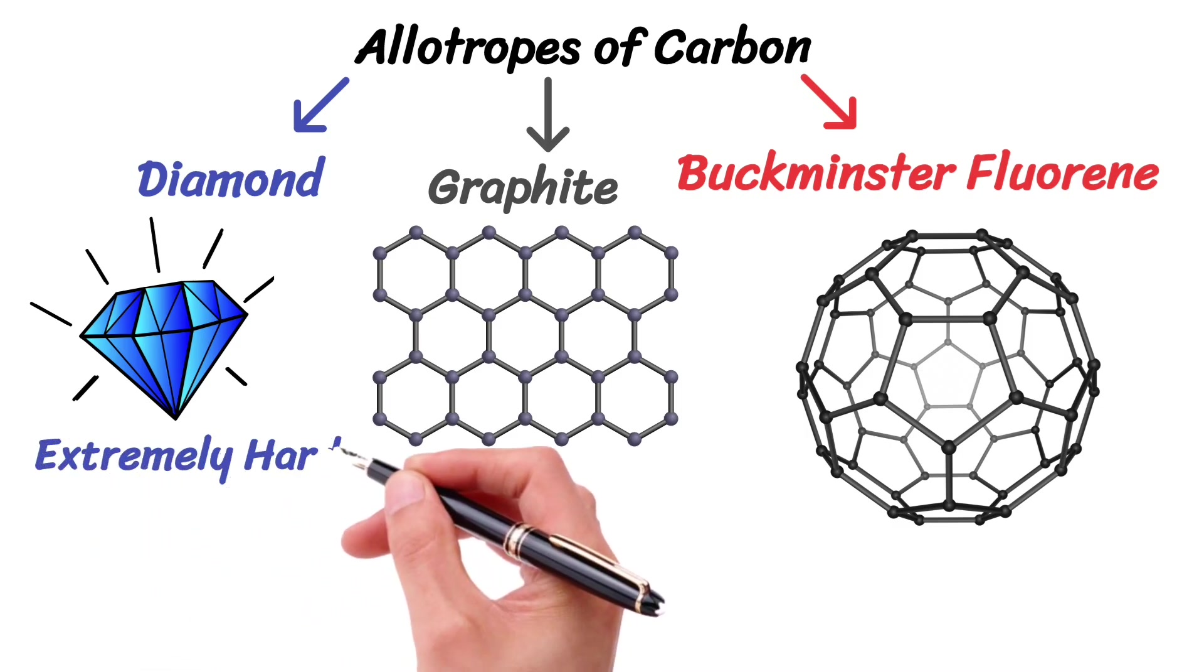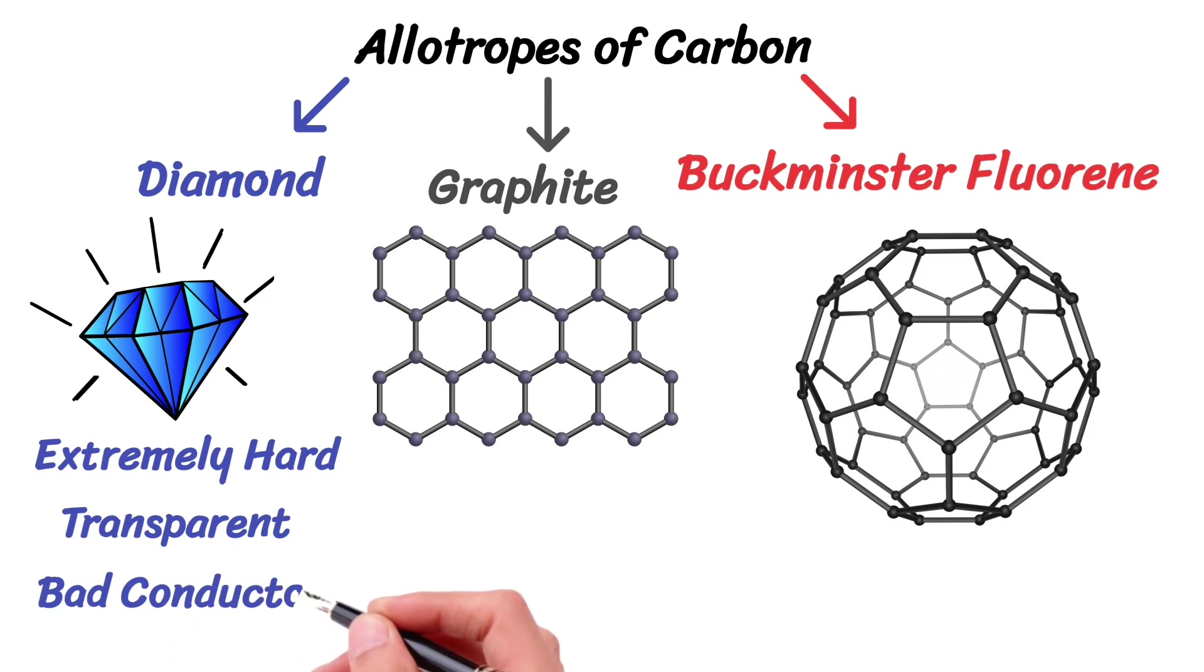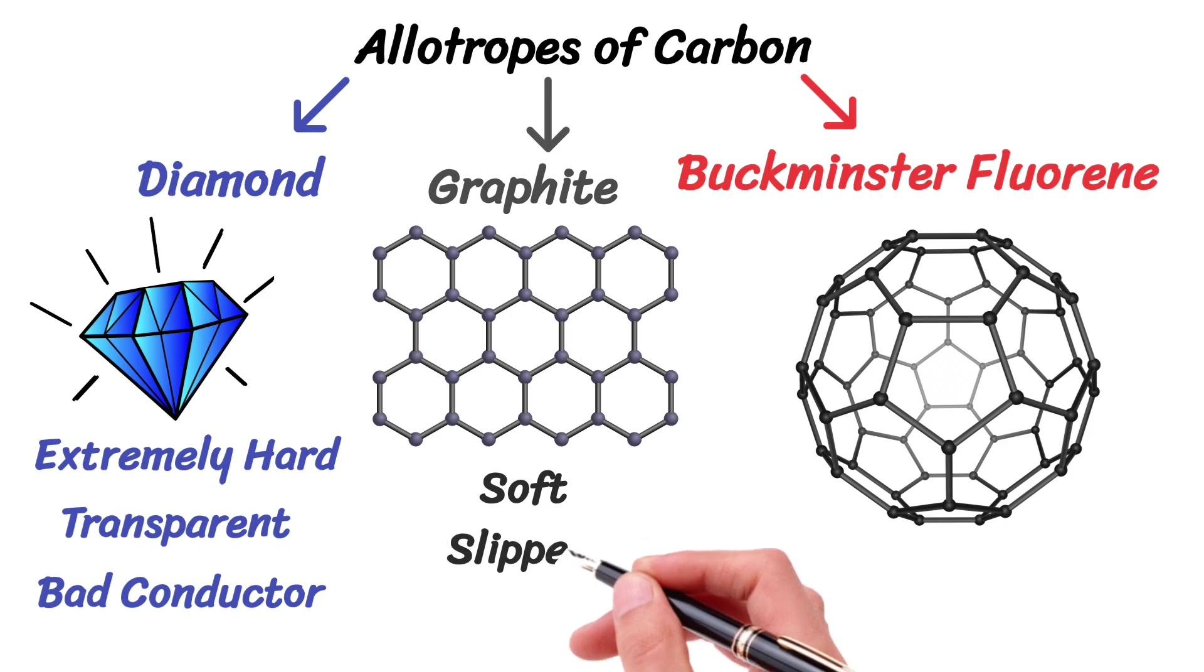Diamond is extremely hard, transparent, bad conductor of electricity, with a 3D network of carbon atoms. Graphite is soft, slippery, good conductor of electricity, composed of flat layers of carbon atoms.